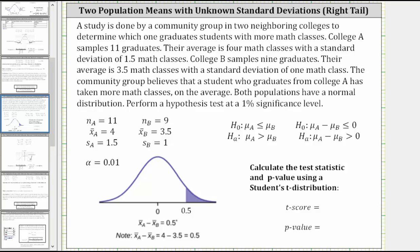Welcome to an example of a hypothesis test for two population means with unknown standard deviations. A study is done by a community group in two neighboring colleges to determine which one graduates students with more math classes.